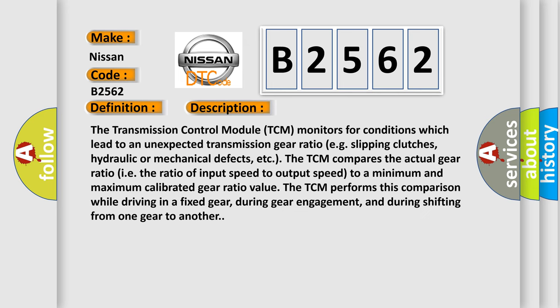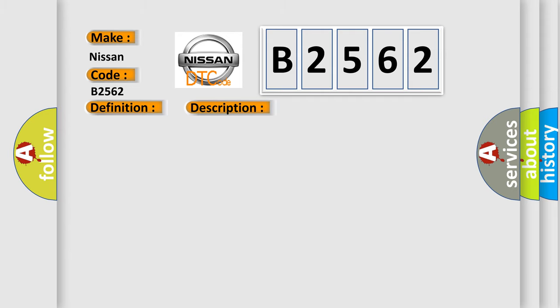The transmission control module (TCM) monitors for conditions which lead to an unexpected transmission gear ratio, such as slipping clutches, hydraulic or mechanical defects. The TCM compares the actual gear ratio — the ratio of input speed to output speed — to a minimum and maximum calibrated gear ratio value. The TCM performs this comparison while driving in a fixed gear, during gear engagement, and during shifting from one gear to another. This diagnostic error occurs most often in these cases.